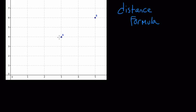And that basically tells us if we want to find the distance between any two points, we can treat the distance between those two points as the hypotenuse of a right triangle.